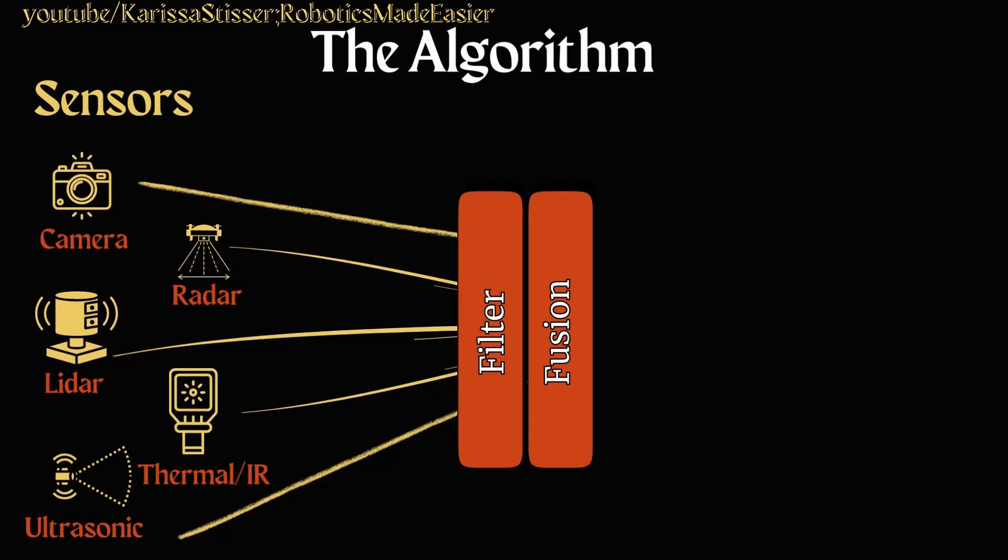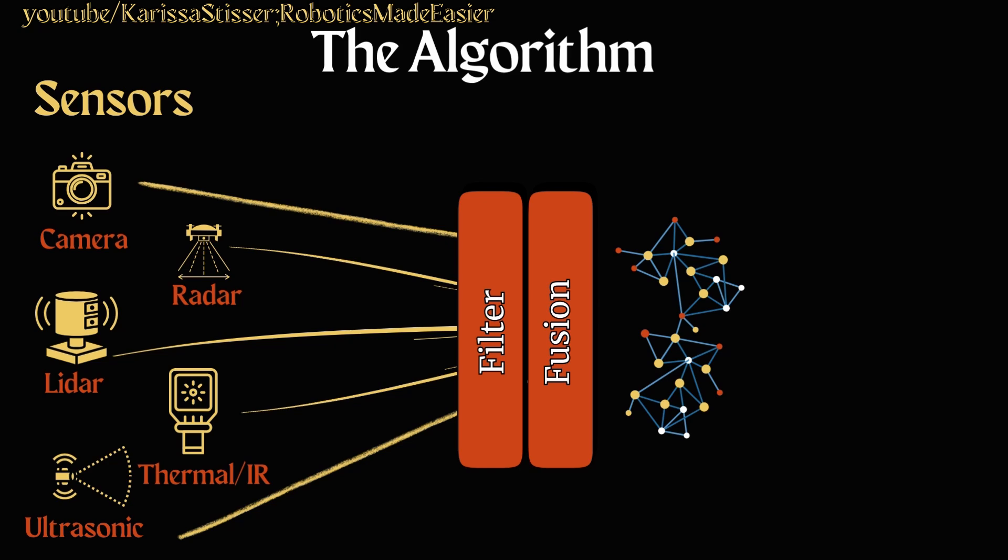Once you have your data fused, you'll have to decide which pieces of data match with which targets you're tracking. Some will be new, which you'll have to decide how many consistent pieces of information can be deemed a new active target. Some will add to existing targets, and some existing targets won't get any updates for a period and will have to be considered stale.